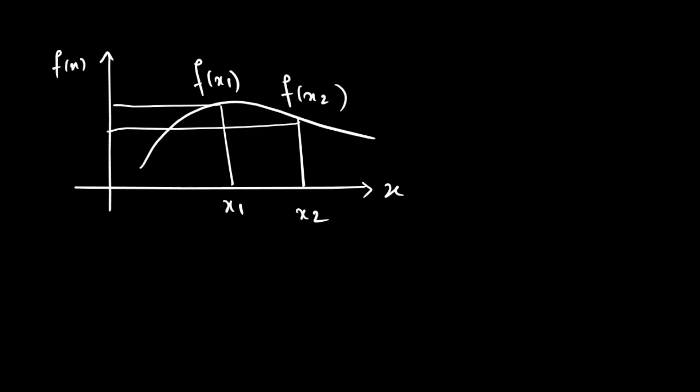Suppose we have a function f, let it be any abstract function represented by this curve. If we have to measure the value of f for different values of x, we need to do it individually for x1 and x2 using classical computation.